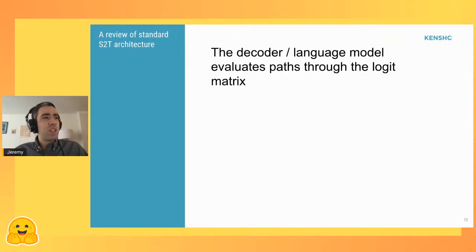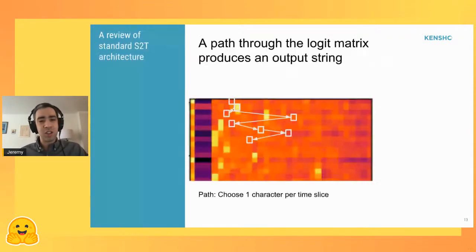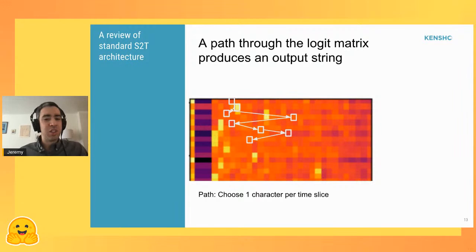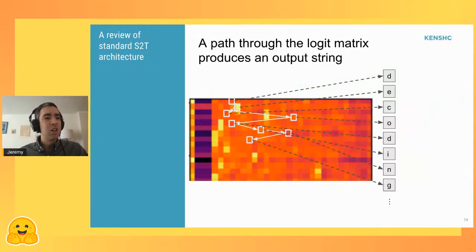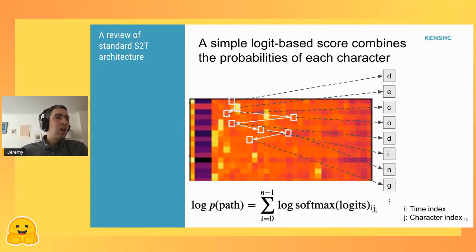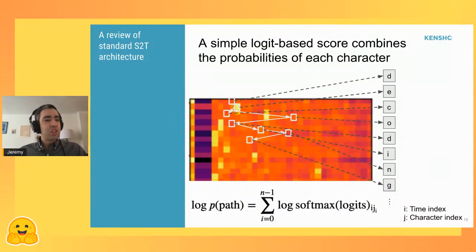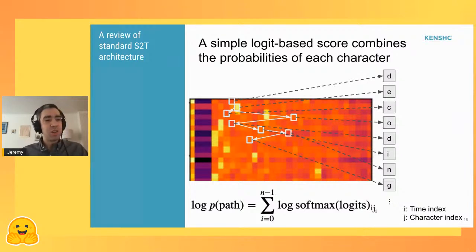The decoder model is evaluating some sort of path through your logit matrix — a path being that you choose one character for each time slice. From there, you can define a simple logit-based score that combines the probabilities of each character. If you take the log softmax of your logits, you can define a log probability score which is just the sum of the log probabilities. Given any path, you can then define some sort of score on it.